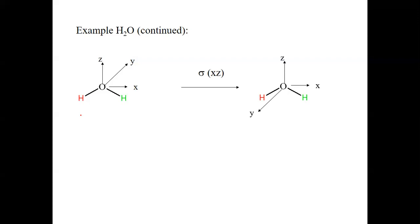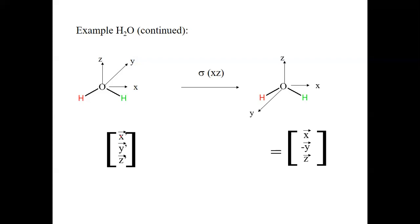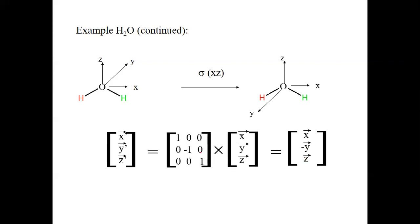We can express this in matrix form: the new coordinates (x′, y′, z′) = (x, −y, z). The matrix representing σ(xz) has the form (1, 0, 0 / 0, −1, 0 / 0, 0, 1).